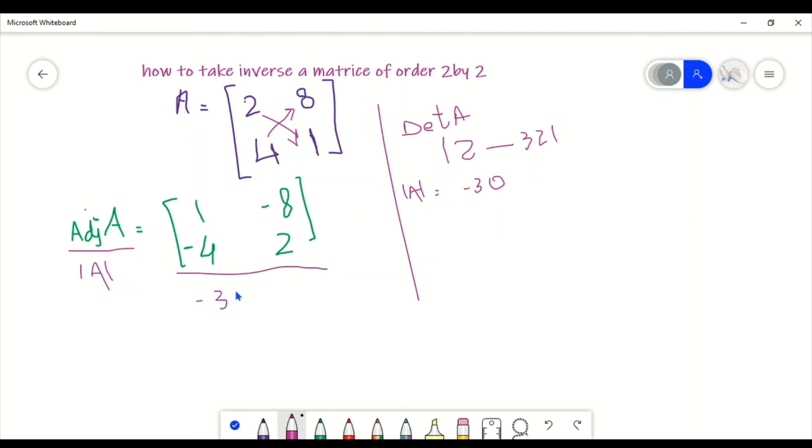So we've got adjoint over determinant of A, that is this matrix divided by minus 30. What does our answer become? Our answer is minus 1 over 30, and we've got minus 8 over 30.